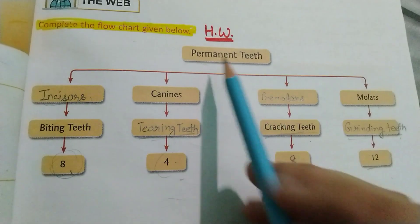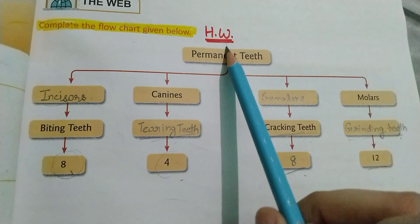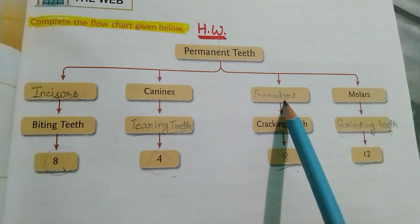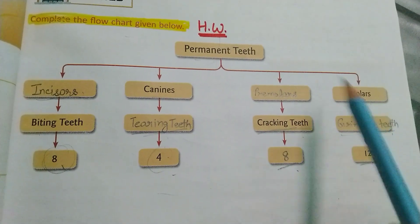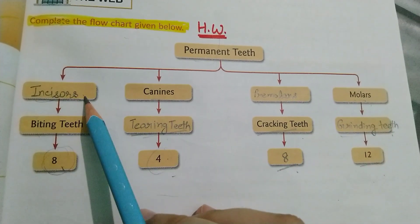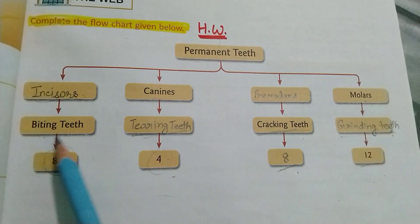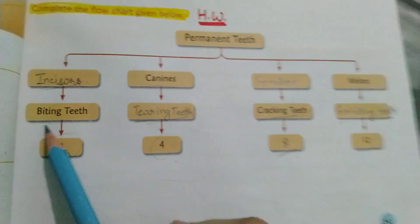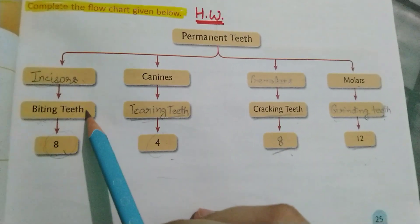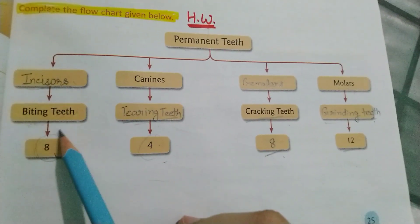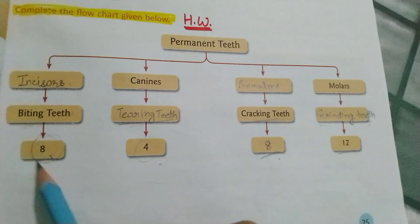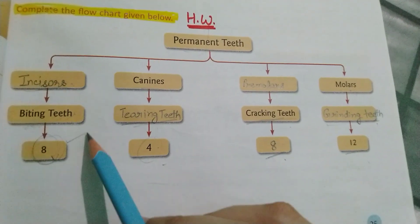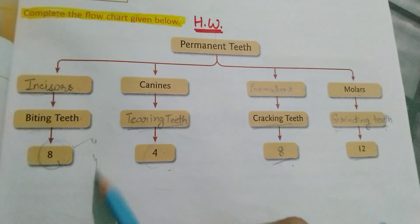Next, flowchart hai hamare permanent teeth ki types. Hote hain: incisor, canines, premolar and molar. Incisor ka kya function hai? Biting teeth hote hain — food ko bite karne mein kaam aate hain. Kitne hote hain? Four in the upper jaw, four in the lower jaw.